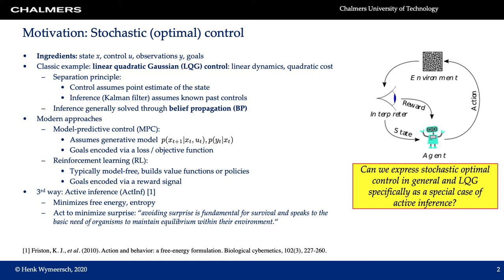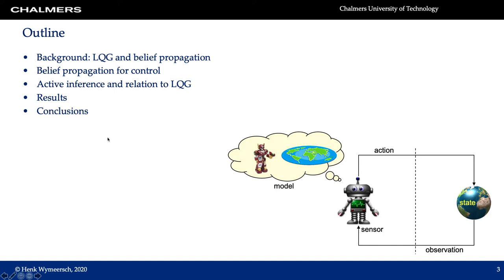With this motivation in mind, here is the outline of this presentation. First I will provide some brief background on LQG and belief propagation. Then I will elaborate on different ways belief propagation has been used for control problems. Then we move on to the main topic, which is the use of active inference for control and its relation to LQG. I will then show one example result and wrap up with conclusions.